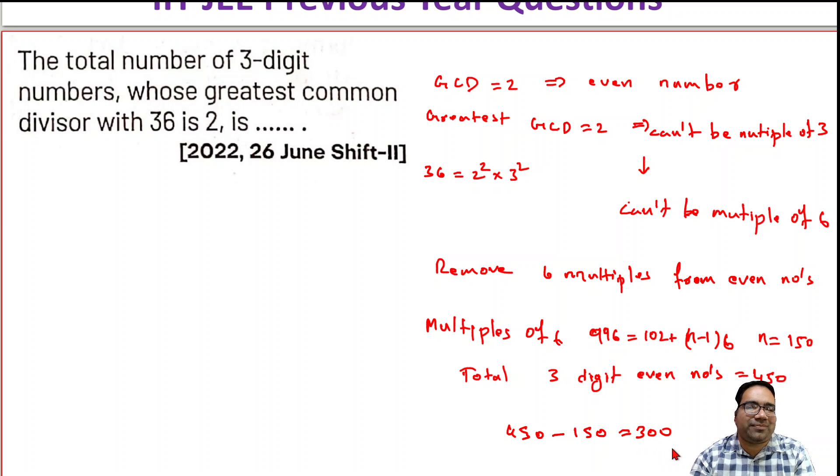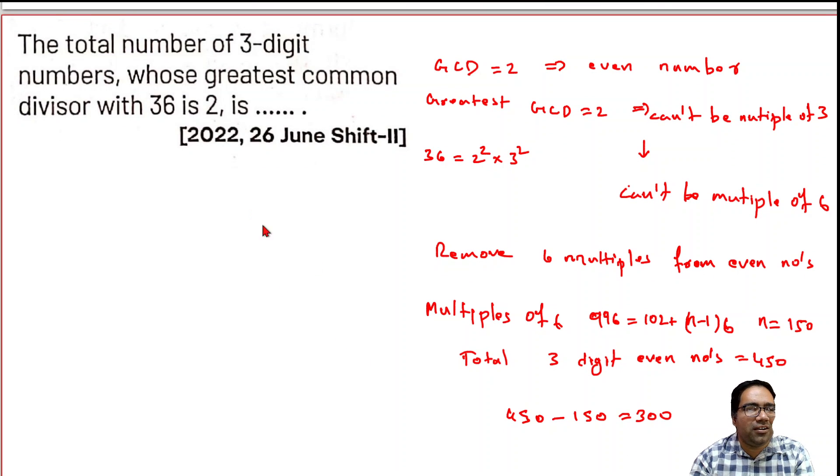So that means the remaining 300 are the ones we're looking for. All these 300 even numbers are not multiples of 6. That means they are not multiples of 3 but they are multiples of 2, which is what we're looking for. So all those numbers, if we find the GCD with 36, you will get 2.